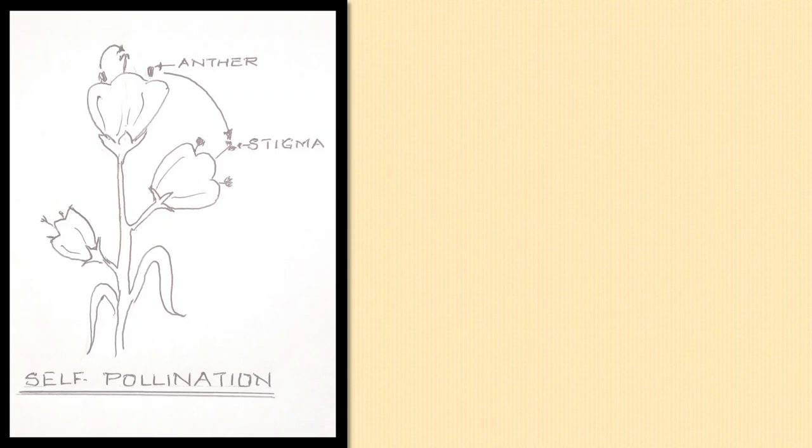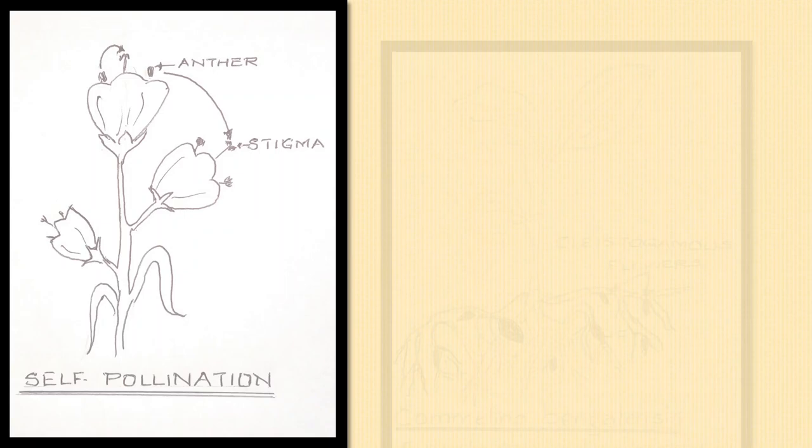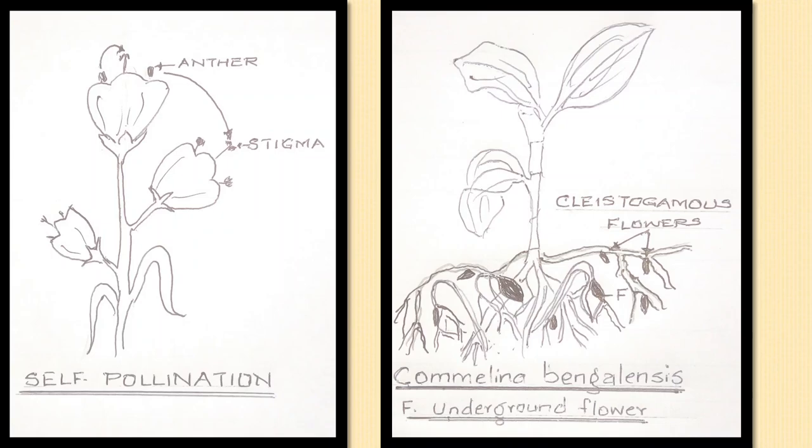Geitonogamy is the transfer of pollen grains from the anther to the stigma of another flower produced on the same plant, e.g. cucurbits. Among bisexual flowers, there are certain flowers that remain closed and are known as cleistogamous, due to which the pollen grains can only pollinate the stigma of the same flower. Cleistogamy is seen in Commelina benghalensis.